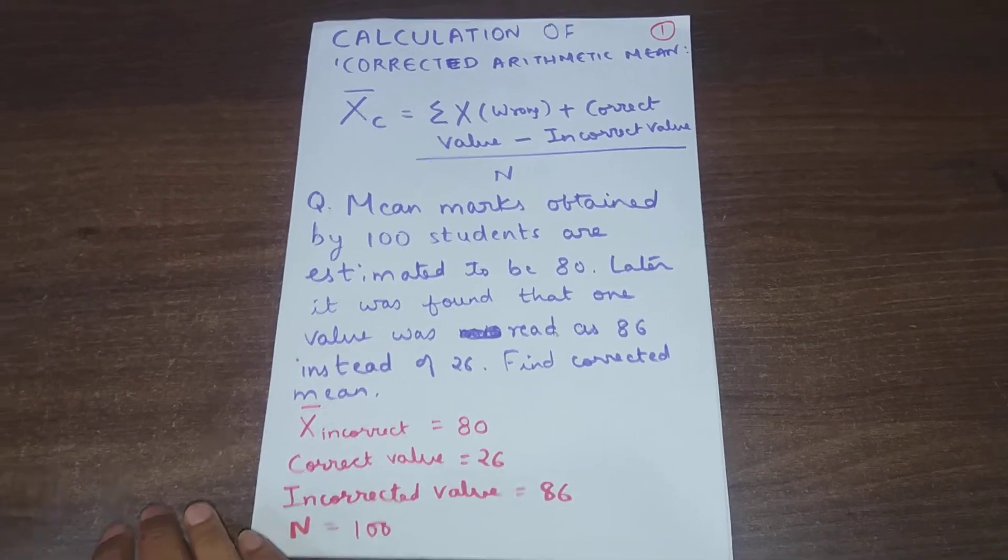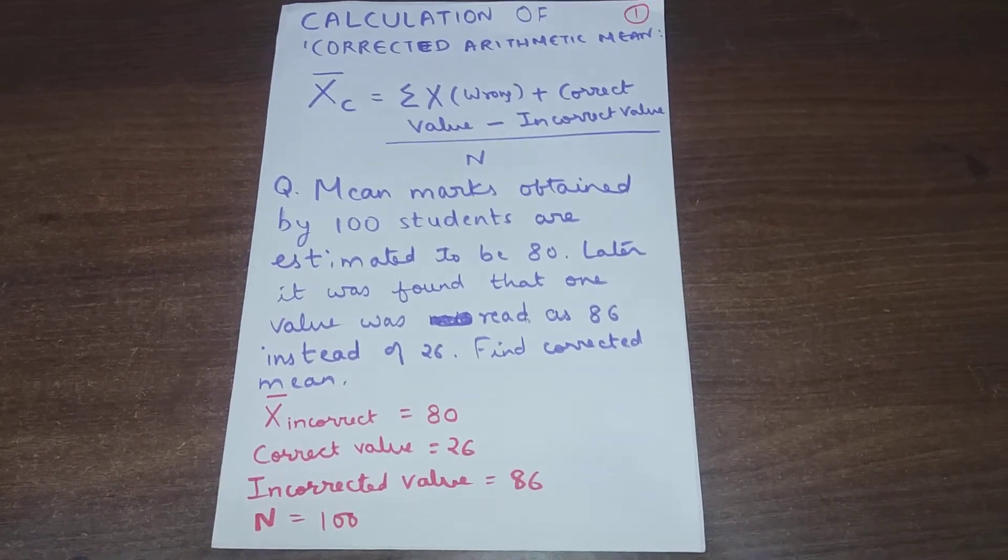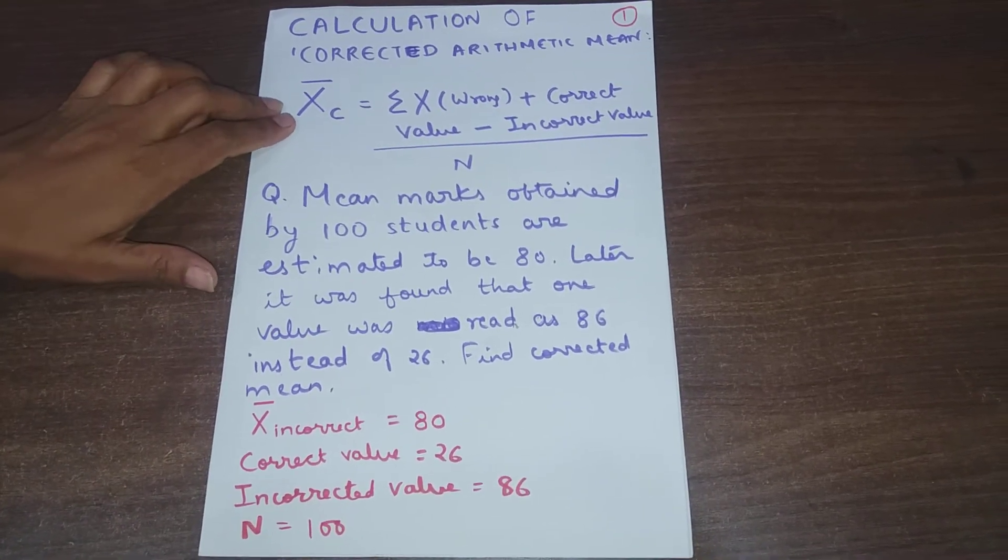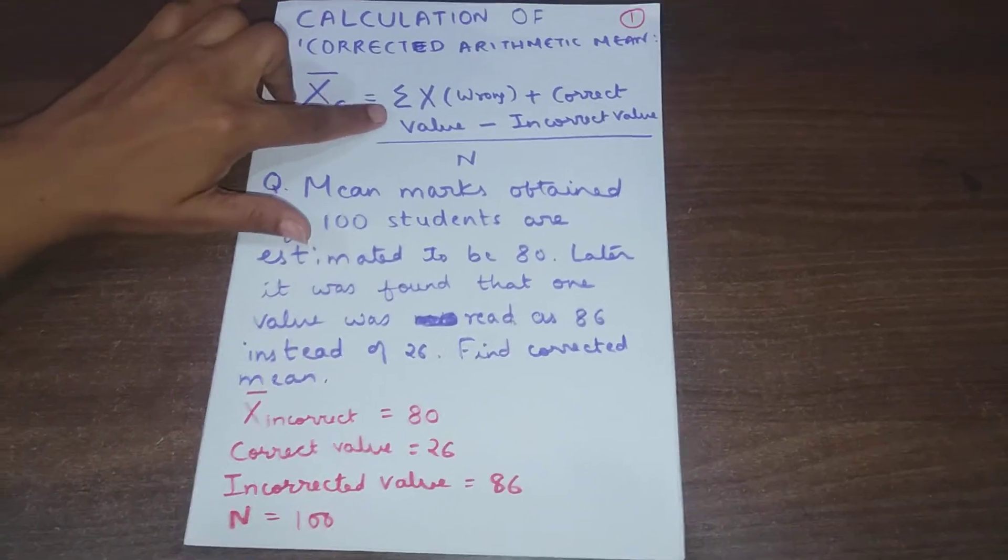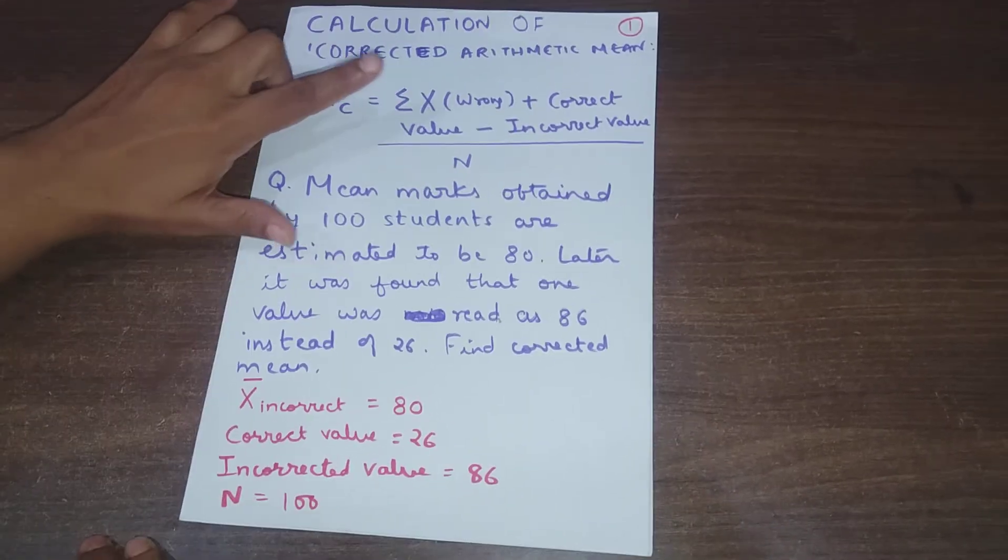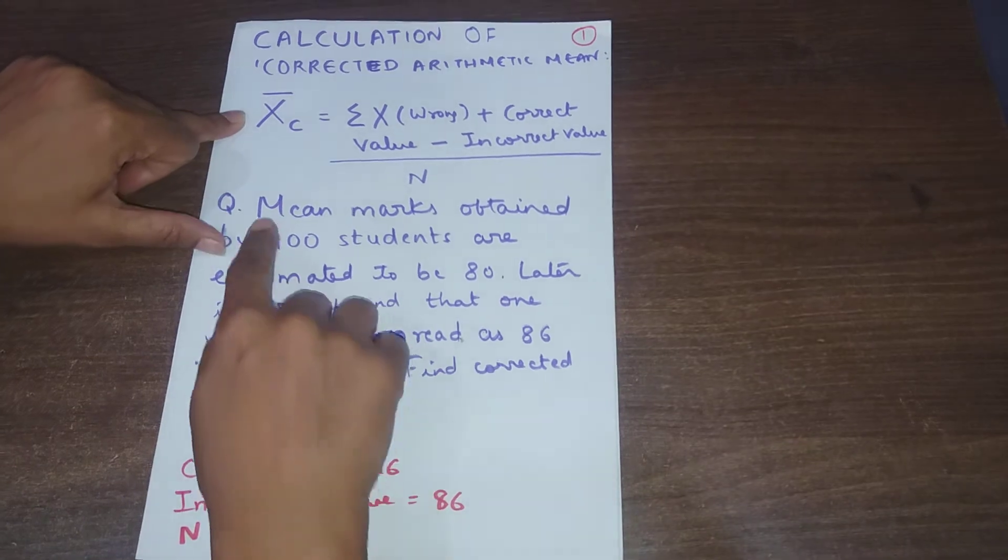Good morning children, today we will learn how to calculate corrected arithmetic mean. For this, the formula goes this way: x̄ corrected equals summation of x wrong plus correct value minus incorrect value, all divided by n.